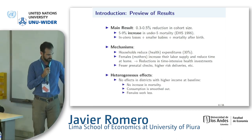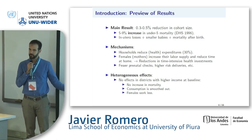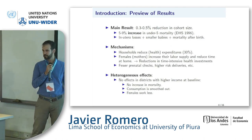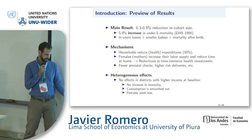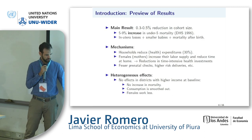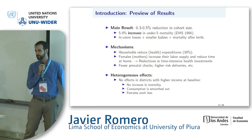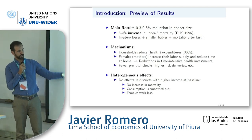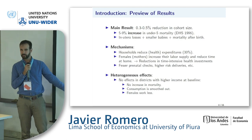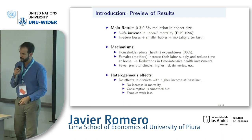We're also able to look at heterogeneous effects across districts in Peru. Districts are the smallest administrative unit. If we look at wealthier districts — still poor, but wealthier — we see no increase in mortality. We find they're able to smooth their consumption, and mothers react differently: they work less, which is consistent with what we see in the literature in developed country settings. This helps put signs on the mechanisms and predict the impact on mortality based on the baseline wealth characteristics of districts.